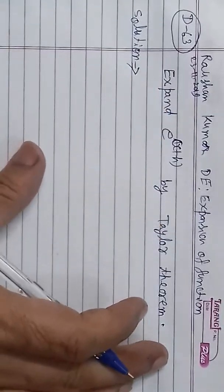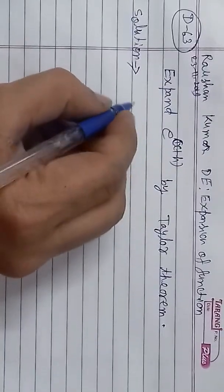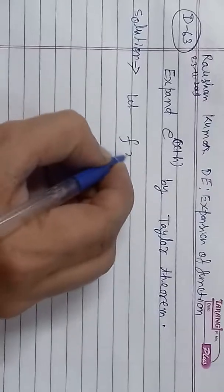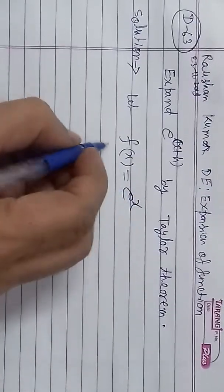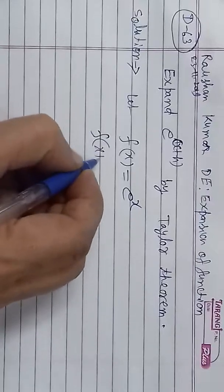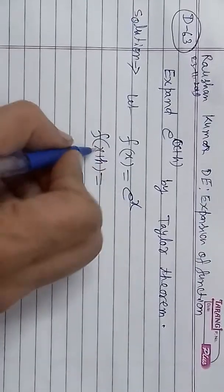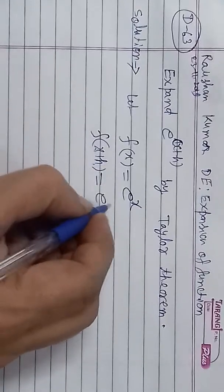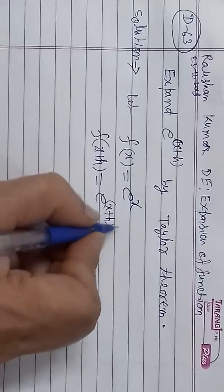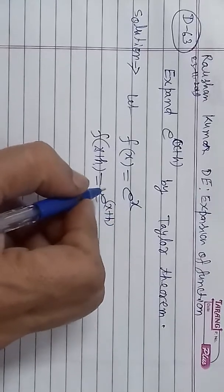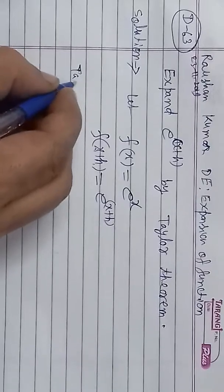Sabse pehle is function ko f(x) = e^x maan lete hain, taaki jab hum f(x+h) nikalenge, to jahan par x hai wahan x+h rakhna hai, jo e to the power (x+h) dega. Yahi woh value hai jisko hamein expand karna hai, Taylor theorem ka use karte hue.